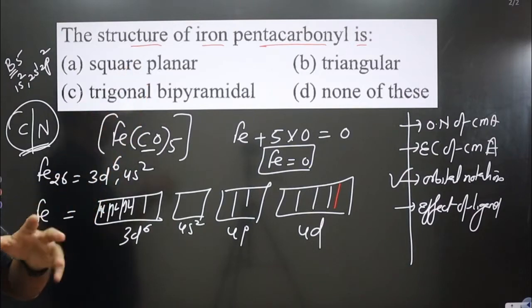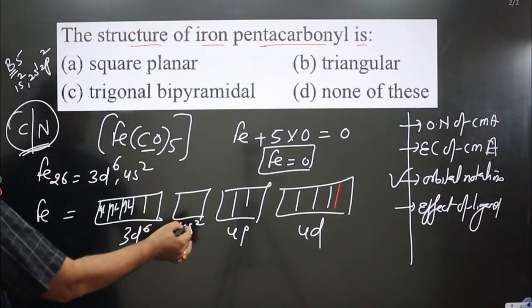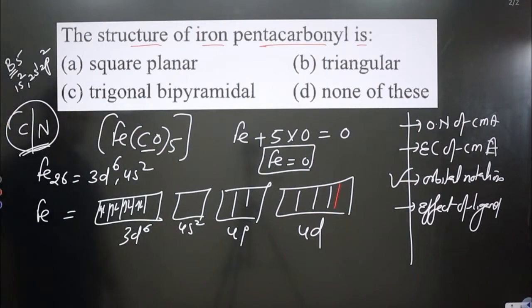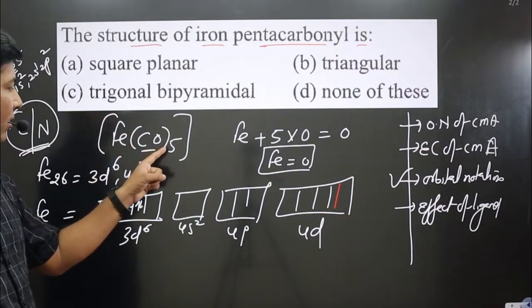We are having a strong field ligand, so pairing of electrons is taking place. These two electrons from 4s will also come here into the 3d orbital.